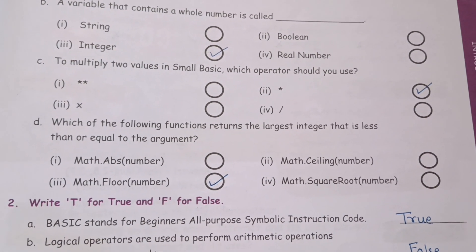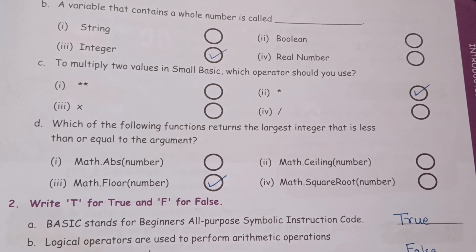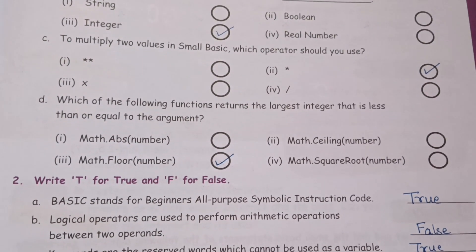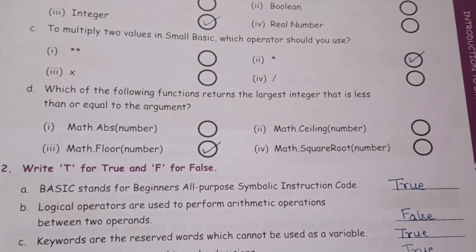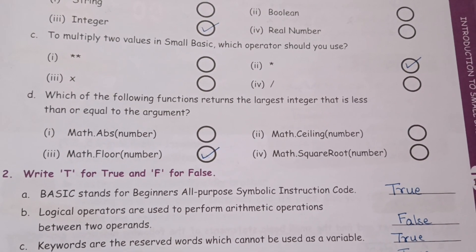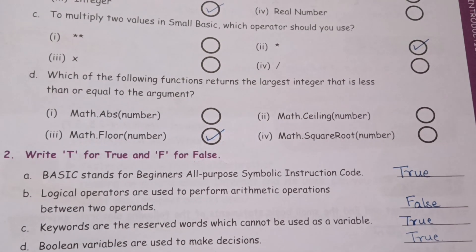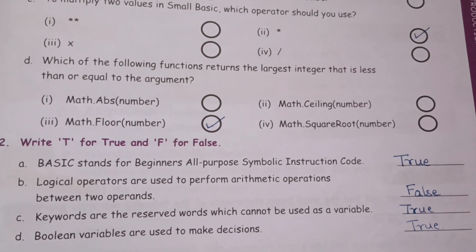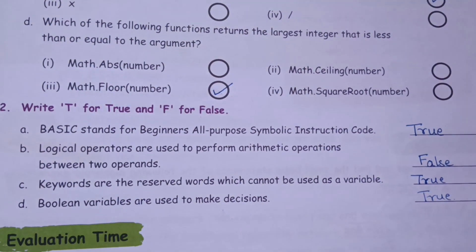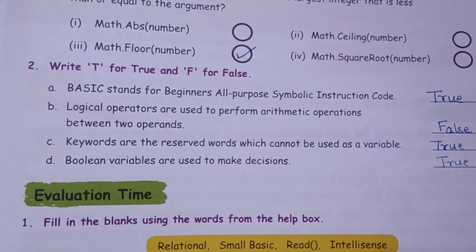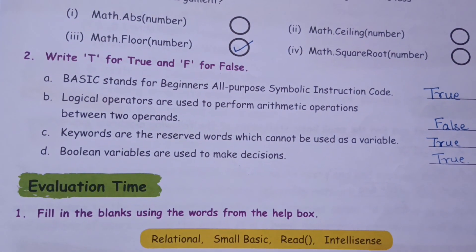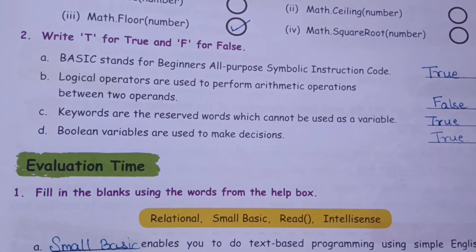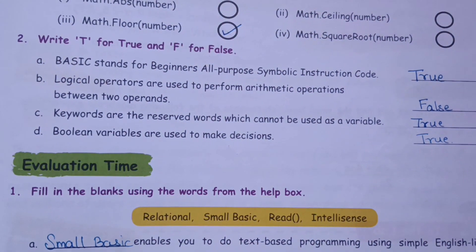Now coming to True/False. BASIC stands for Beginners All-Purpose Symbolic Instruction Code — this is True. Logical operators are used to perform arithmetic operations between two operands — this is False. Keywords are the reserved words which cannot be used as a variable — True. Boolean variables are used to make decisions — this is also True.